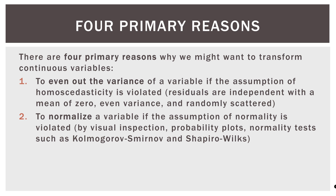Number two: to normalize a variable if the assumption of normality is violated. We can do this by visual inspection using a histogram or density plot, probability plots, or numerical normality tests such as Kolmogorov-Smirnov and Shapiro-Wilks. However, in most cases, just a visual inspection is fine — use a histogram or a probability plot to visually see if the variable is normal.